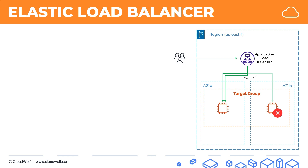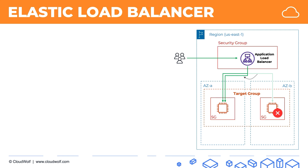Another thing to remember is that security group rules are still important. The EC2 instances have their own security groups and the application load balancer has its own security group, and in all of them you need to enable incoming traffic. So another thing to look out for on the exam is that the security group of the application load balancer and of the EC2 instances need to open up — for example in this case port 80 for HTTP incoming traffic.